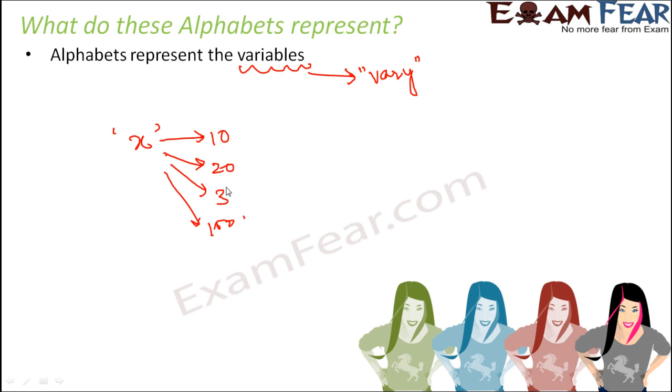And the value of x changes depending on the conditions given in that problem. So depending on the situation, x can take any value. That is why these alphabets are called variables.